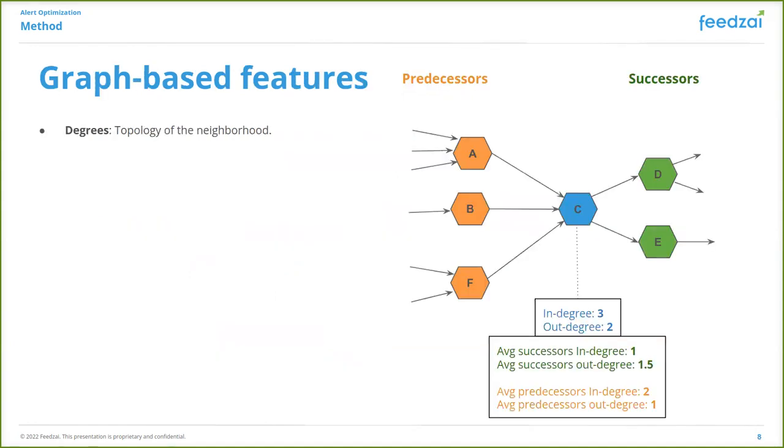Examples of the graph-based features that we use to enrich our data include degrees, which could help us capture the topology and the size of the neighborhood. As you can see in this toy example with a target node C, we calculate its in-degree representing the number of different entities that send money to C, and its out-degree, meaning how many different entities does C send money to. Moreover, we go more than one hop away and calculate features like the average in-degree of the neighbors, predecessors, or successors of C.